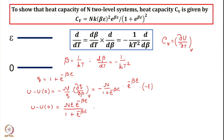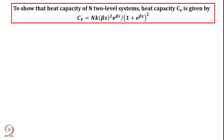We can further simplify by multiplying numerator and denominator by exp(+βε). The upper term becomes 1, giving: U − U₀ = Nε / (exp(βε) + 1). This is the simplified expression for internal energy of the two-level system. Taking its derivative with respect to temperature or β will give us the heat capacity.